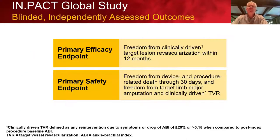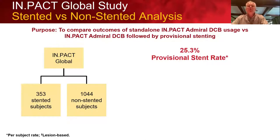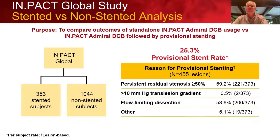This was a blinded, independently assessed outcomes study. The primary efficacy endpoint was freedom from clinically-driven TLR within 12 months, with a primary safety endpoint of freedom from device and procedure-related death through 30 days, and freedom from target limb major amputation or clinically-driven TVR. In Impact Global, we had 353 stented subjects compared to just over 1,000 non-stented subjects — about a 25% provisional stent rate in this complex lesion subset.